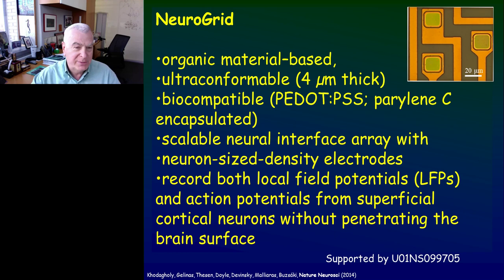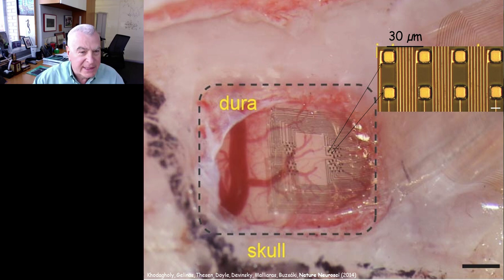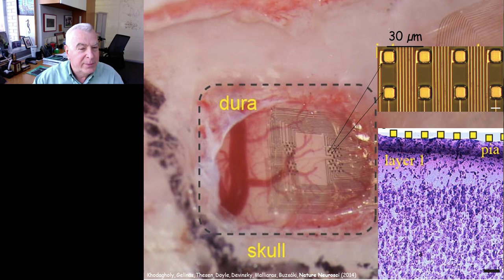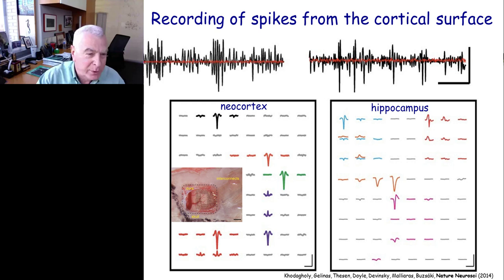The first experiments we did were carried out in rodents. You can see here in the middle that both the bone and the dura were removed and the neurogrid and its recording sites are placed directly on the surface. The recording sites are small — they are neuron-sized — and they are contacting the pia, and through the pia, they are contacting the surface layer of the cortex. With these tiny recording sites, we can record high density local field potentials, multiple unit activity, and occasionally single unit activity, as illustrated both from recordings in the neocortex and in the hippocampus after removal of the overlying tissue.